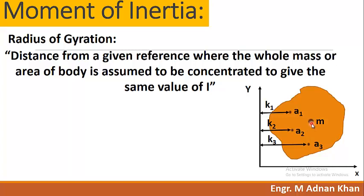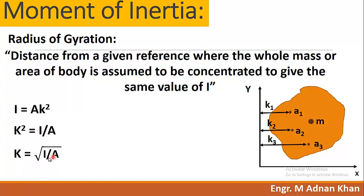The formula is I = Ak², where I is the moment of inertia — discussed in detail in my previous video. If we rearrange this equation for k, which is the radius of gyration, we get k = √(I/A). This is the formula for radius of gyration.